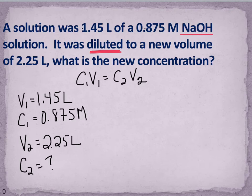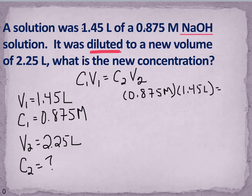Now I can go back and plug in what I know into my equation. So I know C1 is 0.875 molar and V1 is 1.45 liters. My C2 is my unknown and my V2 is 2.25 liters.